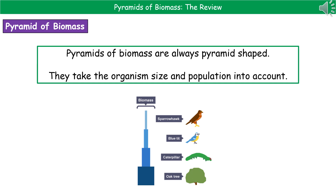If they ask you to draw one of these in the exam, they will give you a piece of graph paper to do it on. So pick an appropriate scale, work out how long each bar will be, producers at the bottom, and then stack them up. Just remember, the last thing to do is to label each of the bars with the name of the organism it represents.